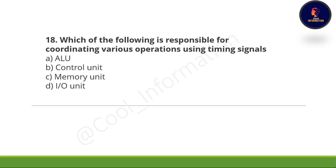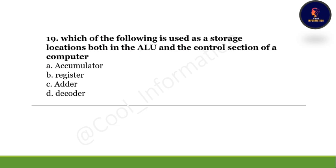Eighteenth question: Which of the following is responsible for coordinating various operations using timing signals? Option A, ALU; option B, control unit; option C, memory unit; option D, input/output unit. It's a simple question — comment your answer below. The correct answer is option B, which is control unit.